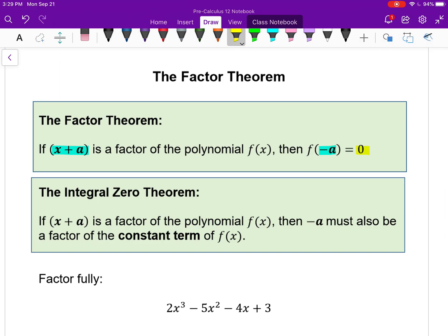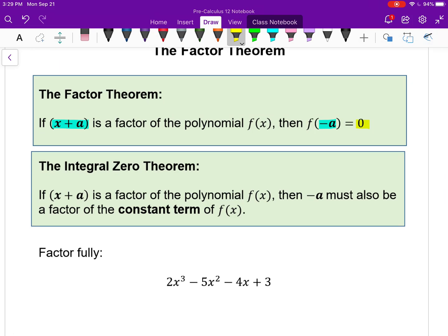If x + a, again a can be a negative number so it's like x - a, but if x + a is a factor of any polynomial, then if you put -a into that polynomial you're going to get out a zero. And that allows us to quickly check if something is a factor. Now another theorem is this Integral Zero Theorem, which is that if x + a is a factor of a polynomial, then that -a must also be a factor of the constant term.